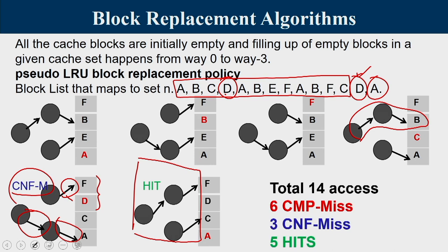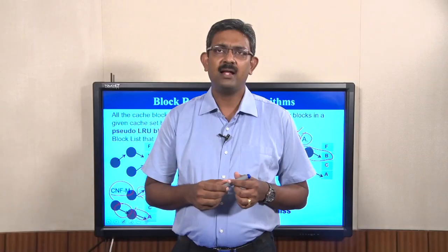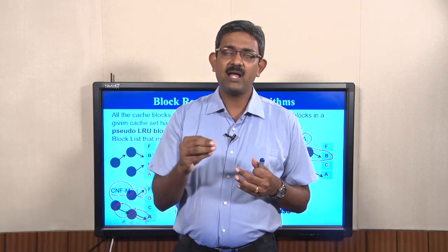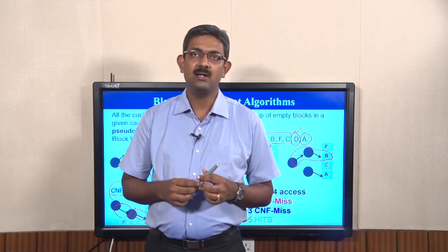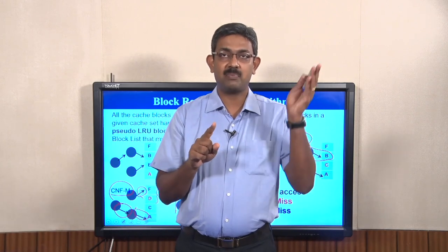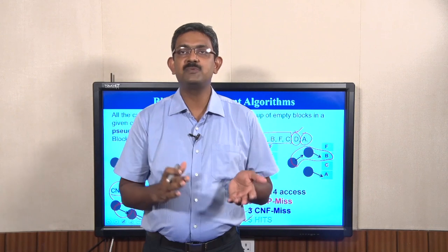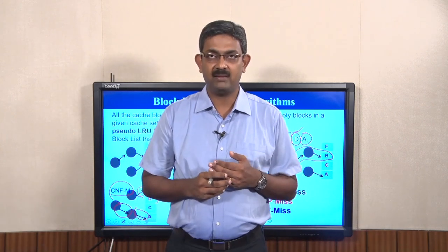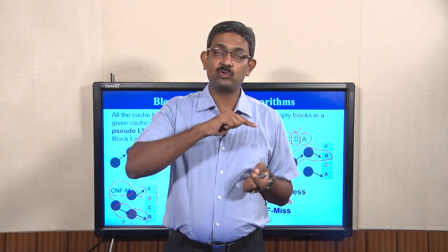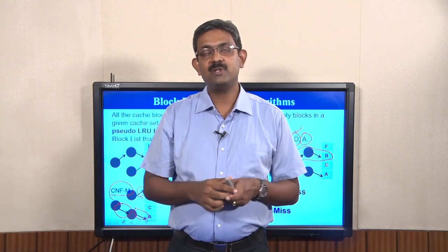To recap the pseudo-LRU rule: whenever there is a block replacement needed, travel through the tree arrows from root to identify the victim block. When a block in the upper subtree is accessed, the arrow flips downward (pointing toward lower, least recently used). When a block in the lower subtree is accessed, the arrow flips upward. This is how the pseudo-LRU tree is maintained.